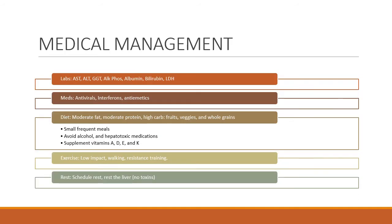The medical management of hepatitis includes monitoring labs — checking liver function tests, alkaline phosphatase, serum proteins like albumin and globulins, bilirubin levels, and LDH, an enzyme that goes along with liver function tests. The medications we use would be antivirals and interferons, and we also can use antiemetics to control nausea and vomiting.